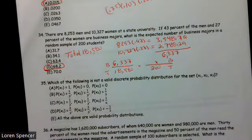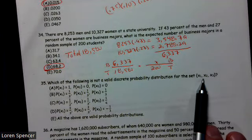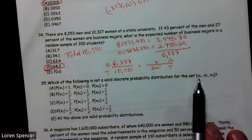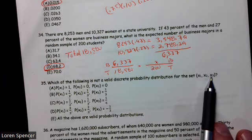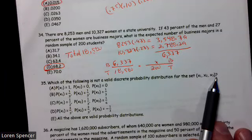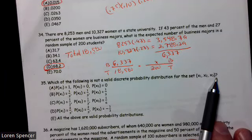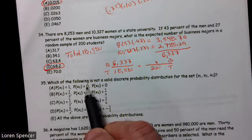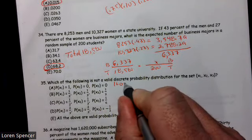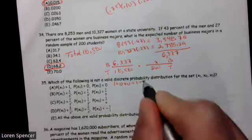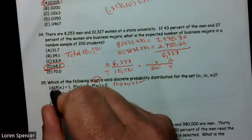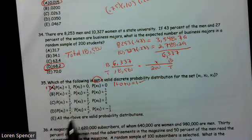Which of the following is not a valid discrete probability distribution for the set x1, x2, x3? Well, this is just a complete way of saying, hey, we've got three different things, three different x values. And remember, our probabilities have to be between 0 and 1 inclusive. And they have to sum to 1. Well, 1 plus 0 plus 0 equals 1. That's good. That's a valid. Because we're looking for not valid. So this is valid. It can't be that one.